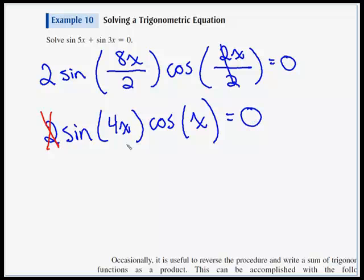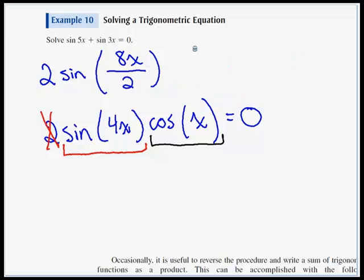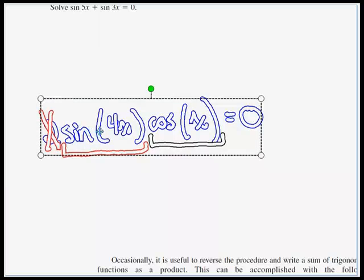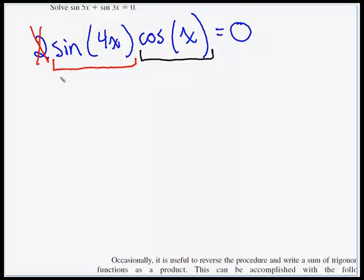So now we have two factors. The sine of 4x is our first factor, and the cos of x is our second factor. And then we'll set each of those factors independently equal to 0. So first let's look at the sine of 4x. The sine of 4x is equal to 0. So that says, when does sine equal 0? Well, just two times, at 0 and at pi. So sine is equal to 0 at 0 and at pi radians.